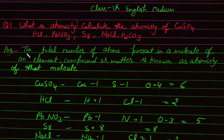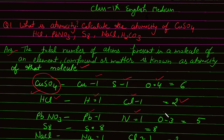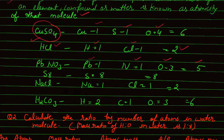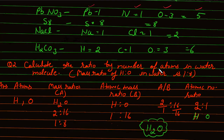Answer: The total number of atoms present in a molecule of an element, compound, or matter is known as the atomicity of that molecule. Copper sulfate CuSO4: copper=1, sulfur=1, oxygen=4 → atomicity = 6. HCl: hydrogen=1, chlorine=1 → atomicity = 2. Lead nitrate Pb(NO3): Pb=1, N=1, O=3 → atomicity = 5. NaCl: sodium=1, chlorine=1 → atomicity = 2.